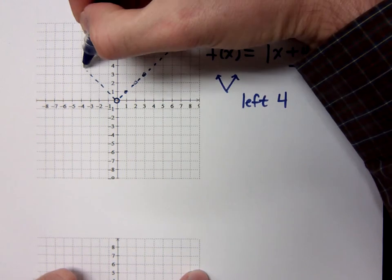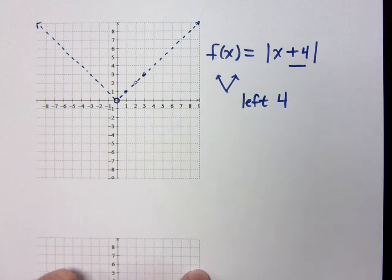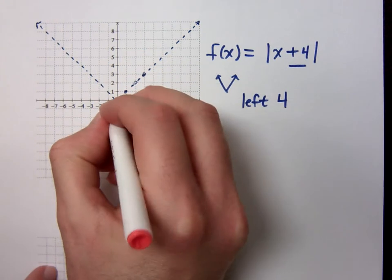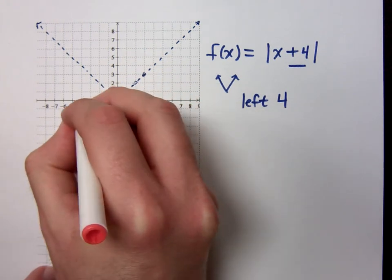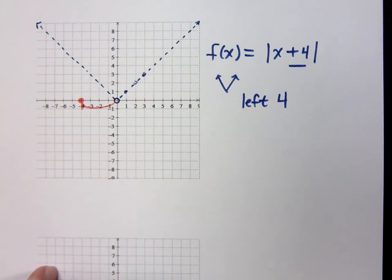I have the same thing going over here. Now that was my original absolute value, but I have to shift this guy to the left 4 units. So that means he's going to start right here at negative 4.